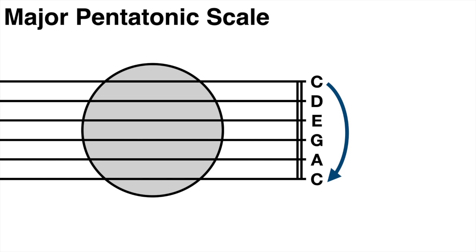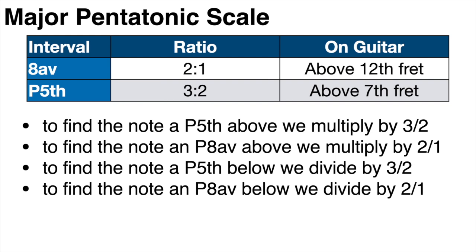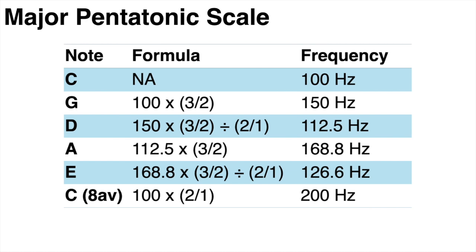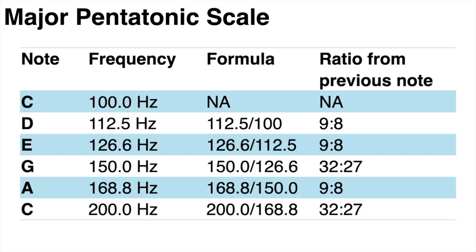So now let's find these frequencies mathematically. Now to find the note a perfect fifth above you multiply by three on two and to find the note an octave above you multiply by two on one. To find the note a perfect fifth below you divide by three on two and to find the note an octave below you divide by two on one. Now we'll need to reduce some frequencies by an octave in order to bring them down to within the same octave range which for us is between a hundred and two hundred hertz. Now here are the frequencies of each note. Now let's write these notes in order from lowest to highest.